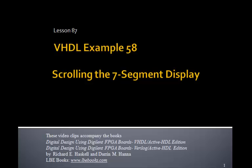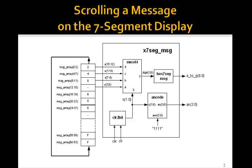This is lesson 87, VHDL example 58. In this example, we'll see how to scroll a message on the 7-segment display. We're going to take our x7seg_b, you remember that we did some time ago, and we're going to modify it.